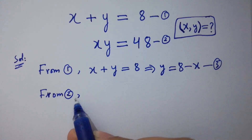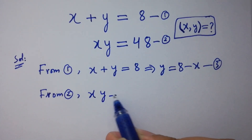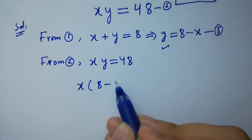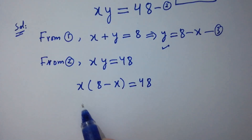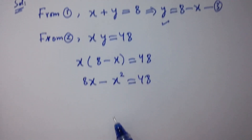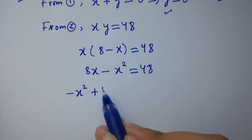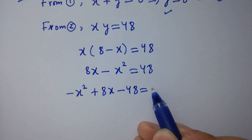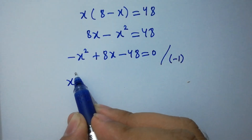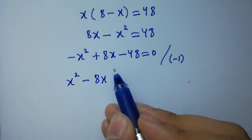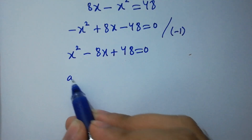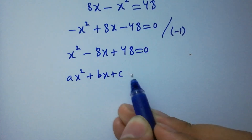From equation 2, x times y equals 48. Substituting the value of y, we have x times (8 minus x) equals 48, giving 8x minus x squared equals 48. Rearranging: minus x squared plus 8x minus 48 equals 0. Dividing by minus 1 on both sides: x squared minus 8x plus 48 equals 0. This is a quadratic equation of the form ax squared plus bx plus c equals 0.